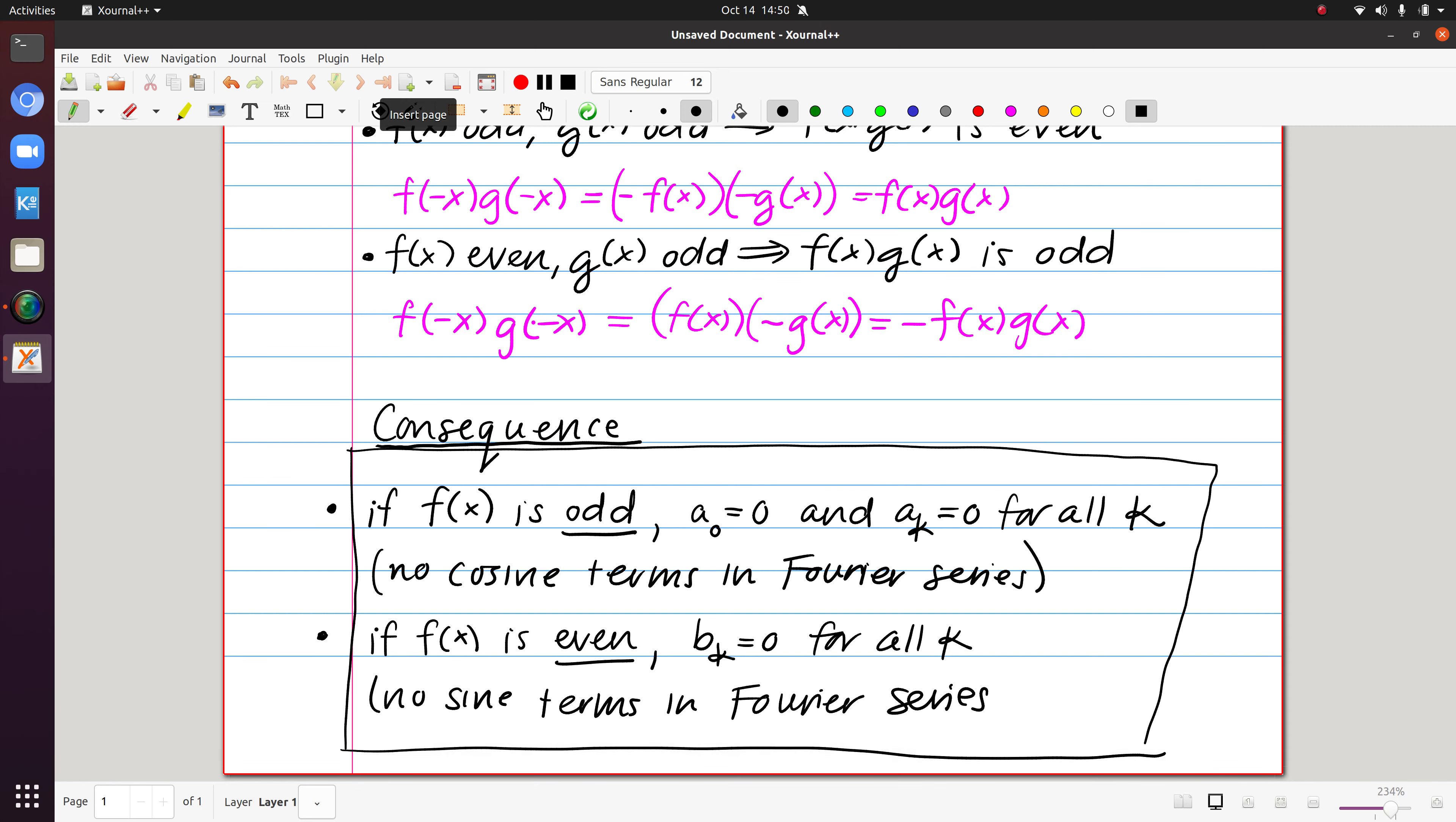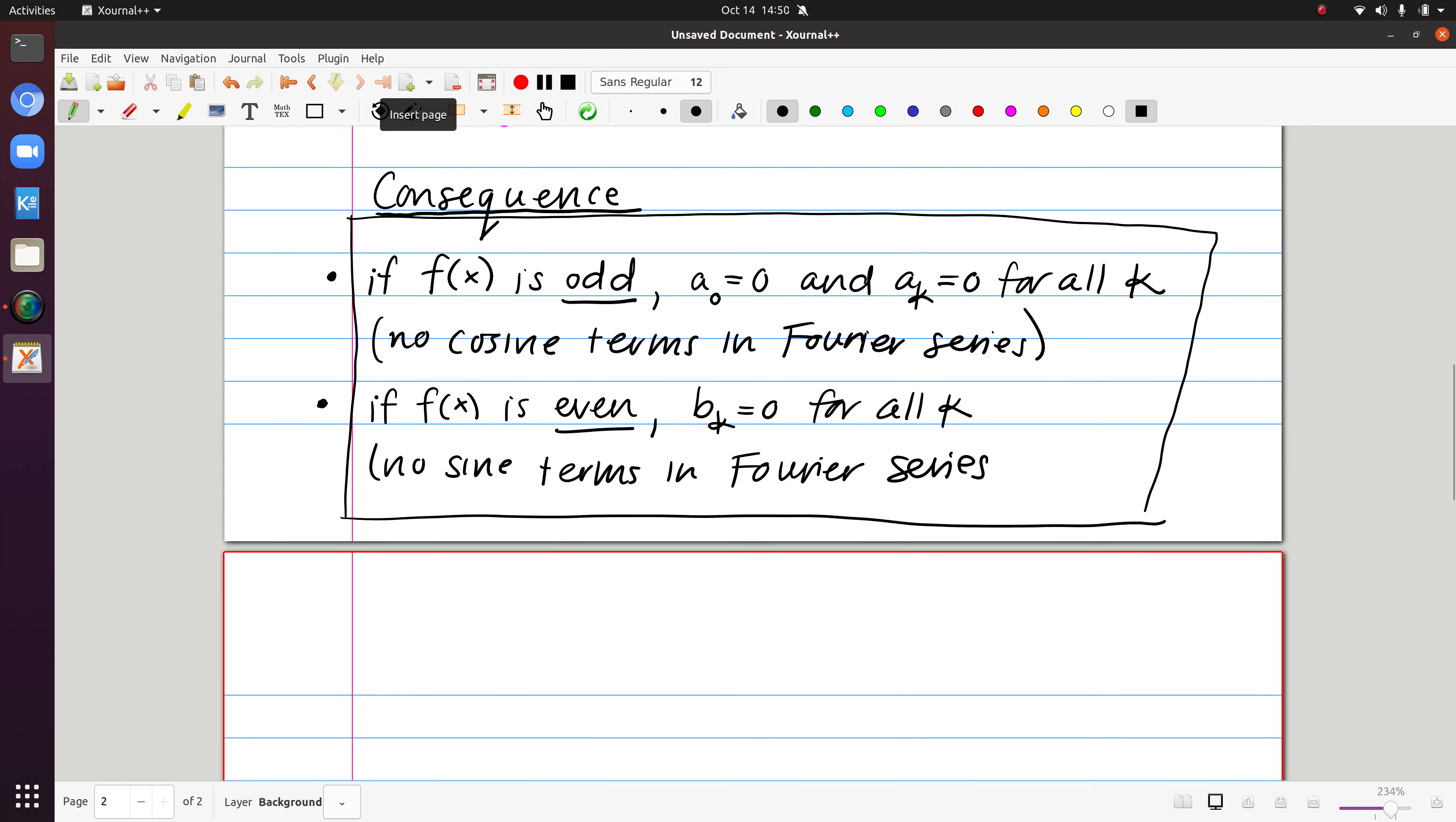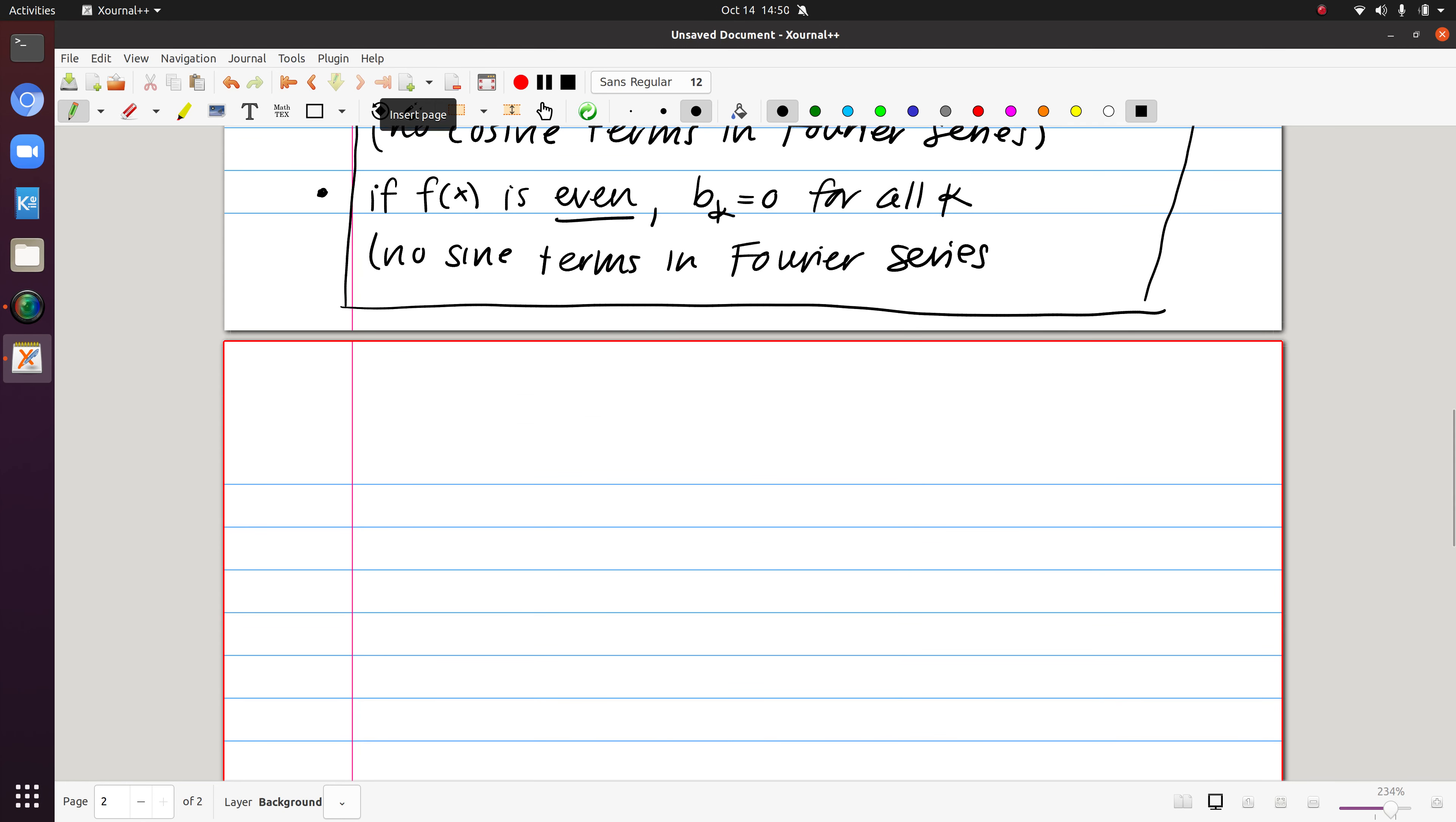Well, we have to think back to our definition of these coefficients. So for one, we said that a sub k is 1 over π, the integral from minus π to π of a product. And that's f of x times cosine kx.